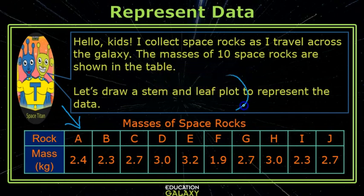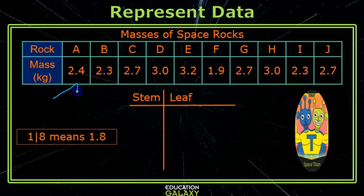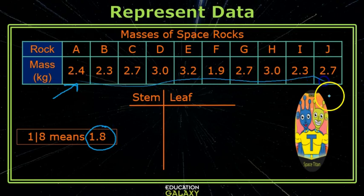Let's draw a stem and leaf plot to represent the data. Since my data values are decimal, the leaves will be the decimal part of the number. If you scan your data, you see that our stems need to be 1, 2, and 3.